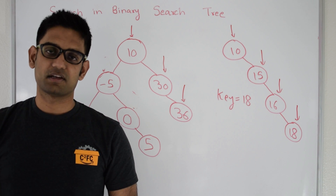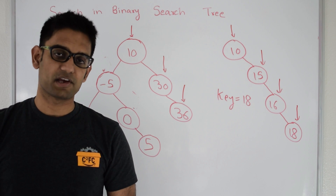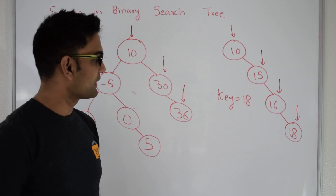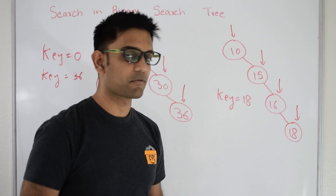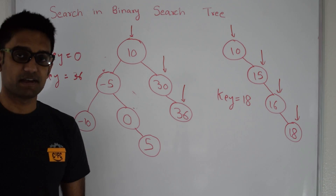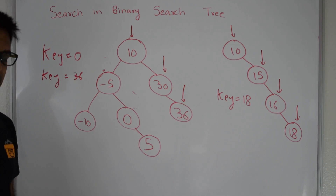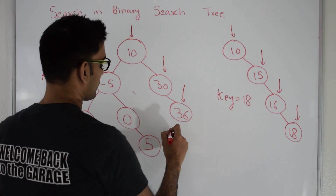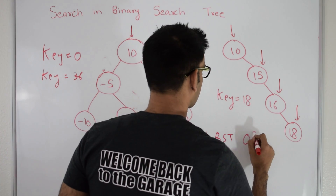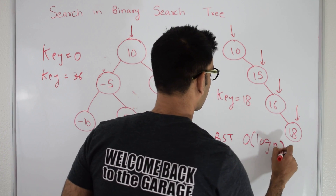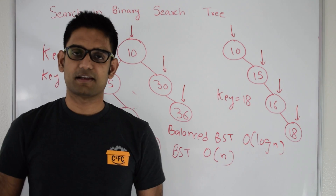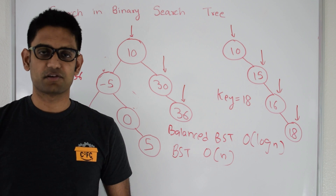How much time does it take to search in a binary search tree? In the worst case it takes O(n) time to search in a binary search tree — like searching in a skewed tree where we look at every element before we find the node we are looking for. If a binary search tree is balanced, the worst case time becomes O(log n). So for a balanced binary search tree, searching is O(log n), and for a regular binary search tree searching is O(n).